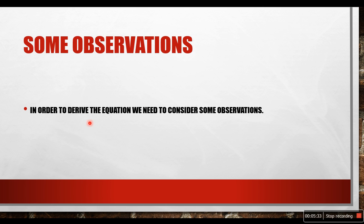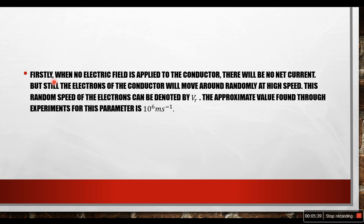In order to derive the equation we need to consider some observations. Firstly, when no electric field is applied to the conductor, there will be no net current. But still the electrons of the conductor will move around randomly at high speed. This random speed of the electrons can be denoted by Vr. The approximate value found through experiments for this parameter is 10 to the power 6 meter per second.